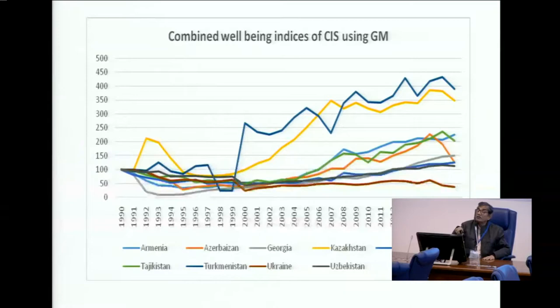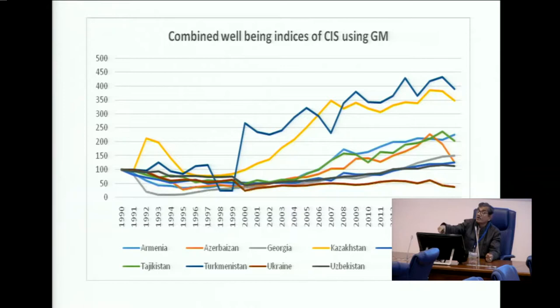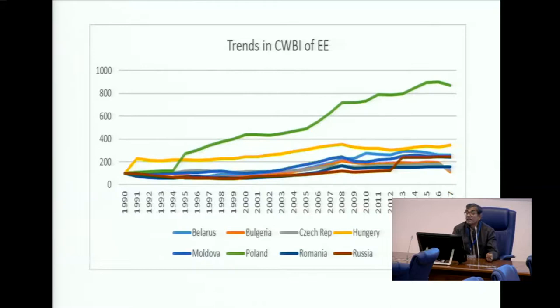Looking at the trend in combined well-being of the CIS countries using the GM method, Turkmenistan and Kazakhstan have experienced higher levels of well-being, and almost every country has experienced a fluctuating or cyclical pattern of well-being. In case of composite well-being of East European countries, Poland tops the list and other countries have also shown a mild increasing trend.